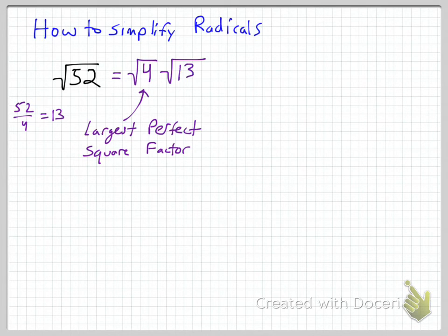So we rewrite this like square root of 4 and then square root of 13 because 4 times 13 is 52. Notice how you can write that, you can do that for multiplication, you can't do that for addition, but you can do that for multiplication.